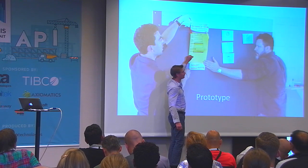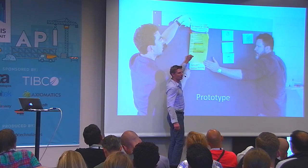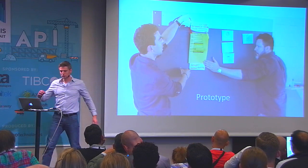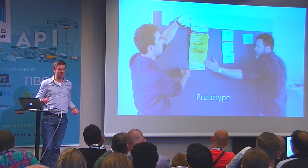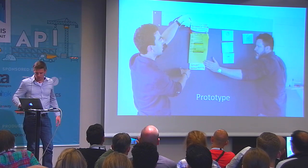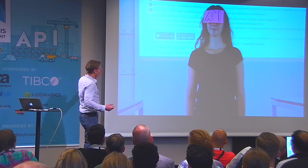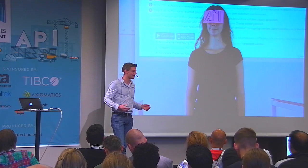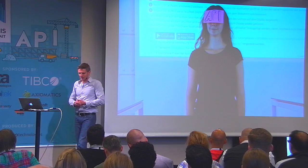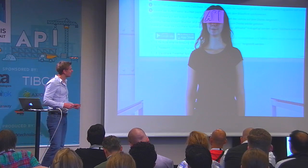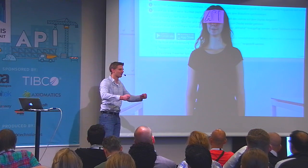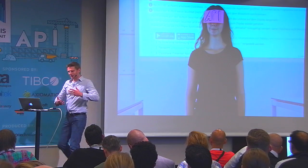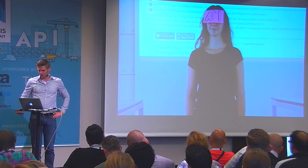That very simple prototype helps build understanding between the API consumer and the API provider. Another group used a different technique — role playing to prototype the API. It was a large enterprise with many back-end systems, and this API had to go to different back-end systems, retrieve data, rewrite it, and deliver it. Using role playing, this information flow could be conveyed quite clearly.